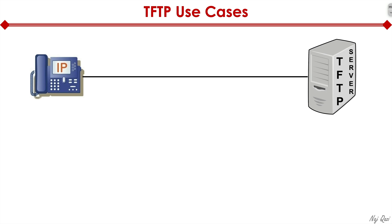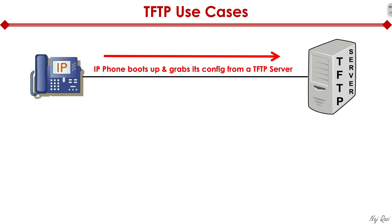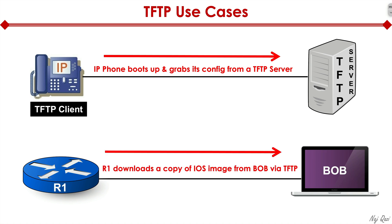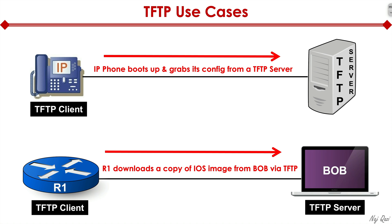A couple of TFTP use cases: an IP phone boots up and grabs its config from the TFTP server — in this case the IP phone is a TFTP client. Another scenario: Bob is running a TFTP server on his laptop, and router R1 wants to download a copy of an IOS image that Bob is serving. Here, Bob's laptop is the TFTP server and R1 acts as the TFTP client.